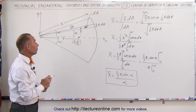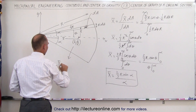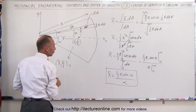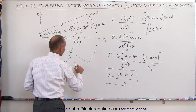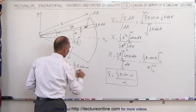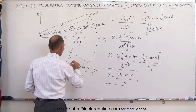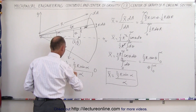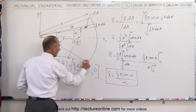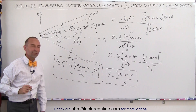The y coordinate is zero. So the center of mass can be written as: the x and y coordinates are (two-thirds r · sin(α)/α, 0), and that's how we express the center of mass of a circular sector.